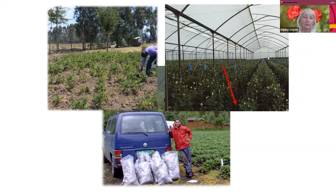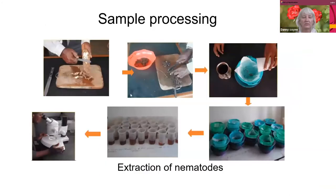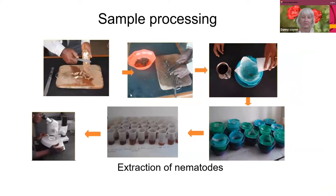About one liter or a kilo per composite sample is a fine size to take. And then just to share with you, there is a process — once a sample comes into the lab, there's a process of extracting those nematodes from soil and roots.